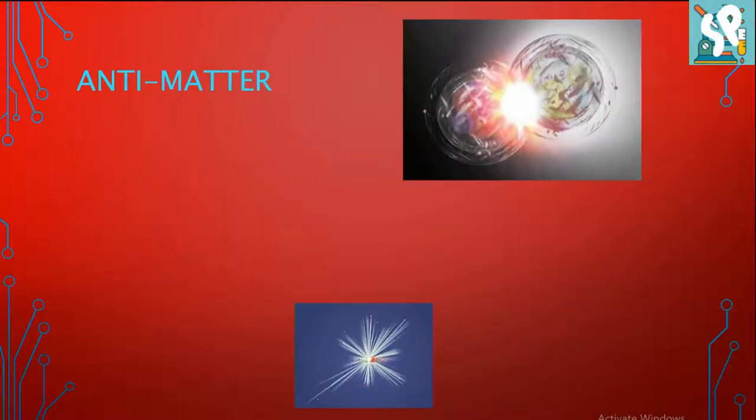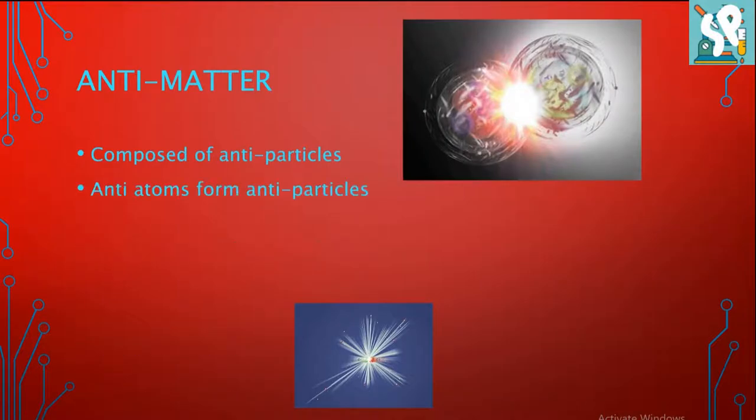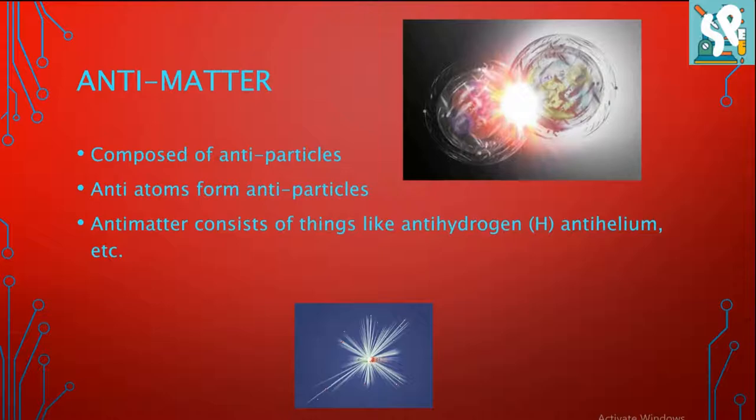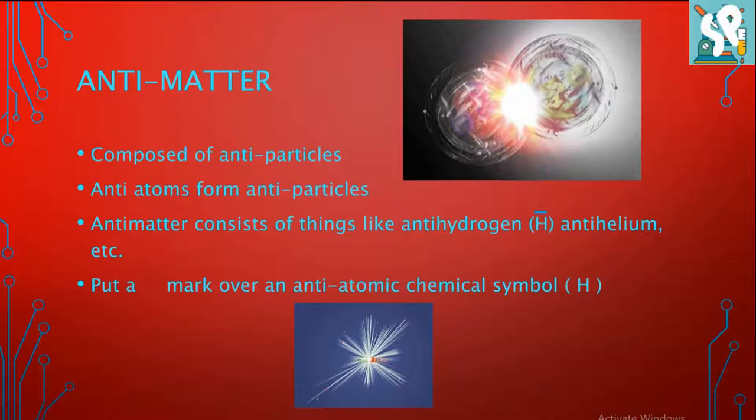Anti-matter - this is way cooler than atomic matter. It's composed of anti-particles. Anti-atoms form anti-particles. Anti-matter consists of things like anti-hydrogen (H̄), anti-helium, anti-nitrogen, etc. You have to put a mark, like this line, on the anti-atomic chemical symbol. For example, you can see hydrogen - put that line on it, as you can see here.